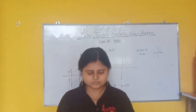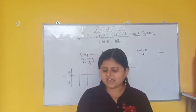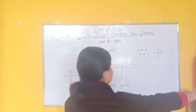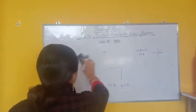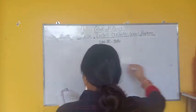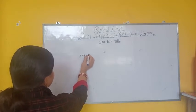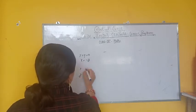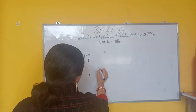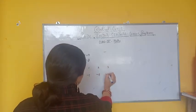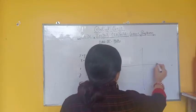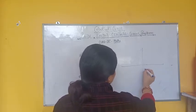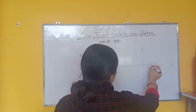Then we will check the graph. Suppose the equation is x plus y is equal to 0. This is a simple graph. For x plus y equals 0, x is equal to minus y. So: x=1 gives y=-1, x=2 gives y=-2, x=3 gives y=-3. The graph is a straight line. x=-1 gives y=1, x=-2 gives y=2, and so on.